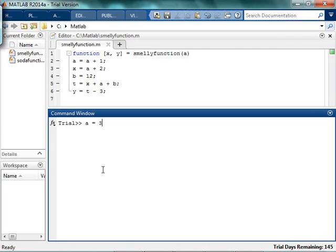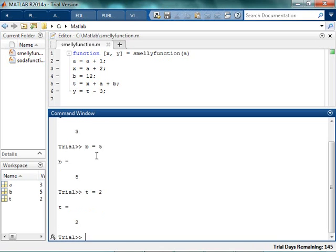So the idea is that we have these in the command line. So by the command line, what I mean is like here. So like here you would type A equals 3, and B equals 5, and T equals 2.